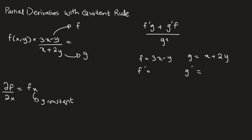Since y is a constant, we differentiate f and g with respect to x only. The derivative of 3x is 3, and the derivative of negative y is 0 since y is constant. For g prime, the derivative of x is 1 and the derivative of 2y is 0, so g prime equals 1.